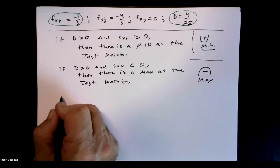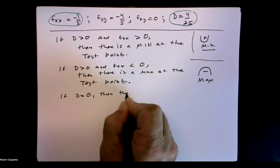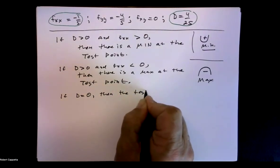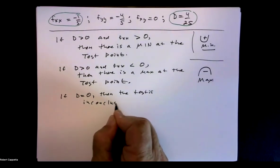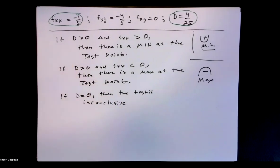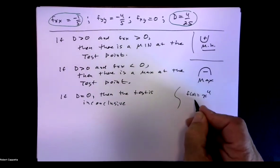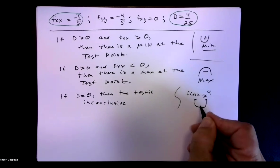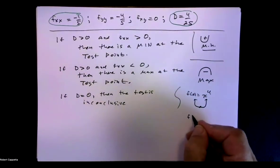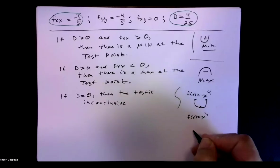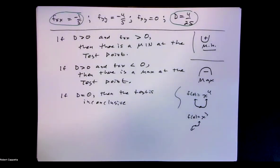Our third case is what if D equals 0. If D equals 0, then the test is inconclusive — exactly as it was with the second derivative test for functions of one variable. For example, f of x equals x to the fourth looks sort of like a parabola and has a min, but the second derivative test gives 0 there. Or f of x equals x cubed — again the second derivative test gives 0, so that doesn't help us.